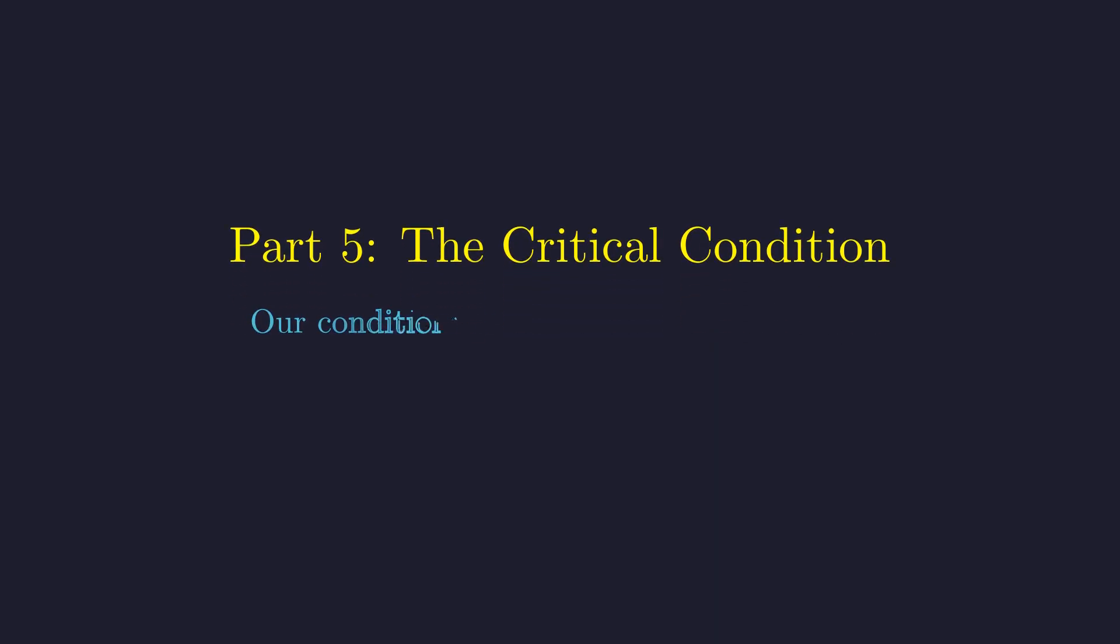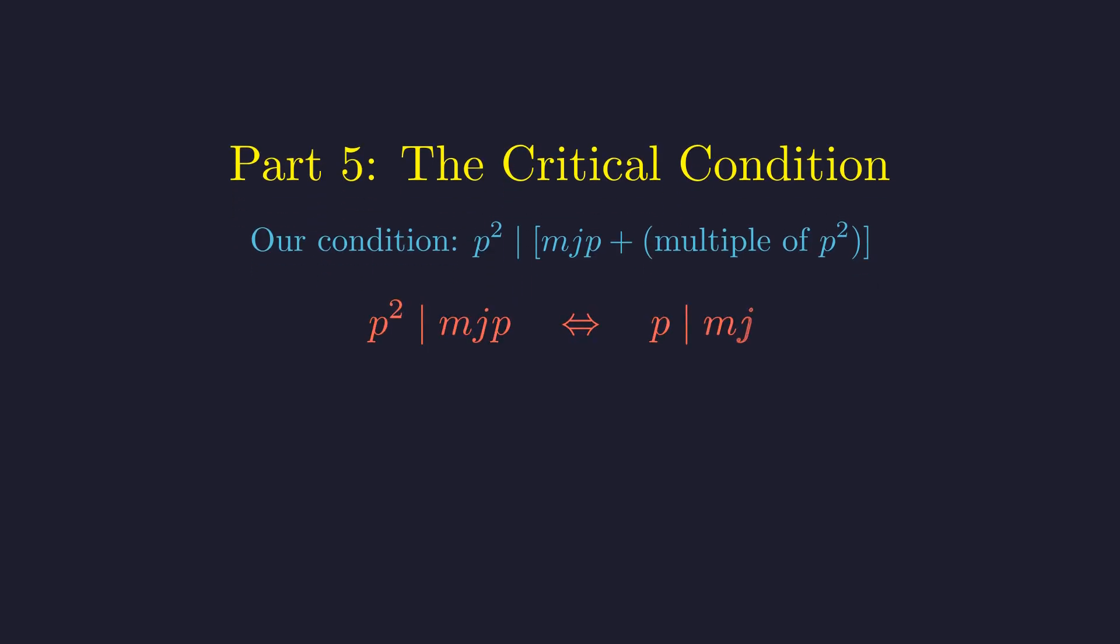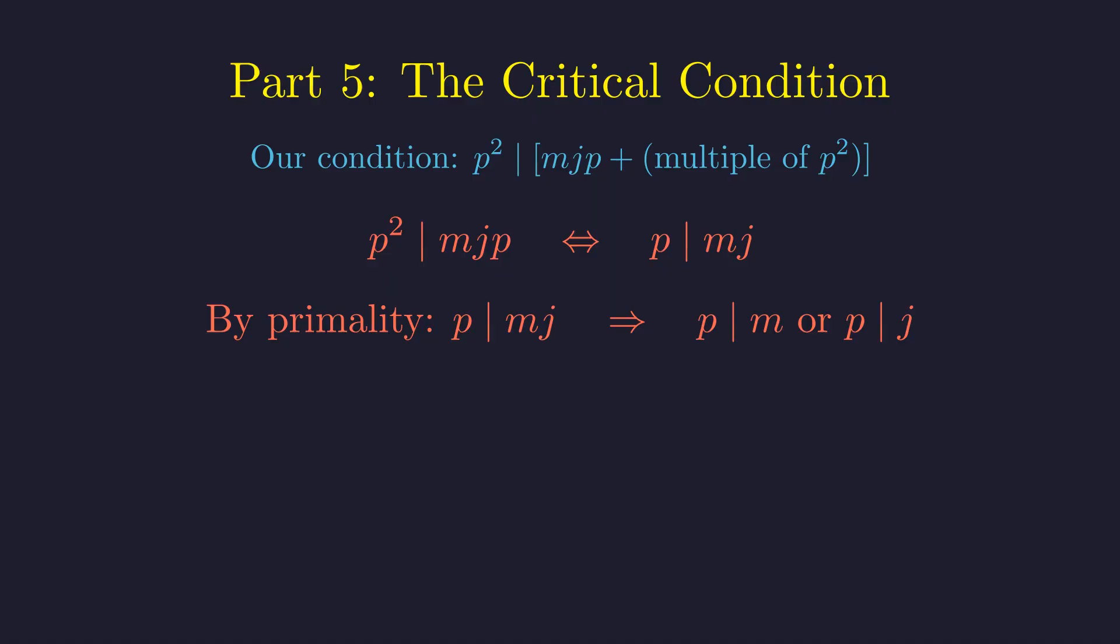Now we can analyze when p squared divides our expression. This is where the mathematics becomes truly beautiful. We need p squared to divide this entire expression. The second part is already divisible by p squared by construction. Since p squared equals p times p, this is equivalent to requiring that p divides the product m times j. Since p is prime, if p divides a product, it must divide at least one of the factors. So either p divides m or p divides j.